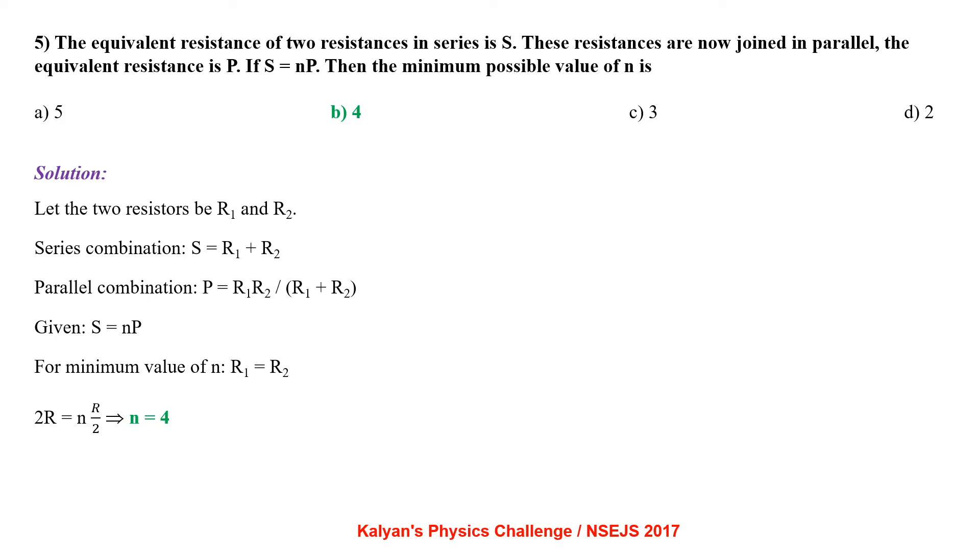The equivalent resistance of two resistances in series is S. These resistances are now joined in parallel. The equivalent resistance is P. If S equal to NP, the minimum possible value of N is.